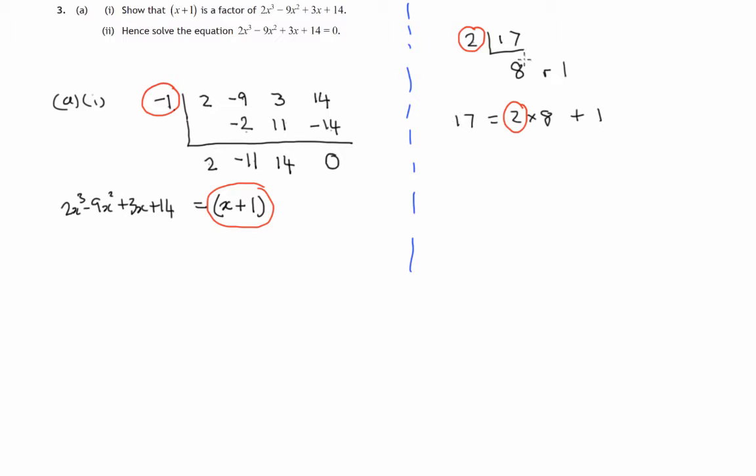And then up here, where we're producing 8, 2 went into 17 8 times, the quotient was 8. This gives the quotient here. And we read this as a polynomial, just as we wrote down the cubic polynomial with 4 coefficients. This is only 3 coefficients, it's gone down from an x cubed to an x squared. There's the coefficient of x squared. So it's 2x squared minus 11x plus 14.